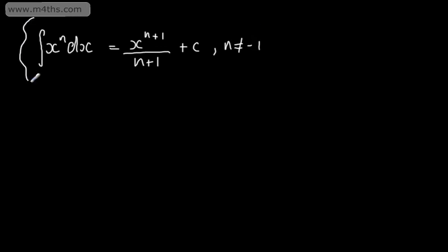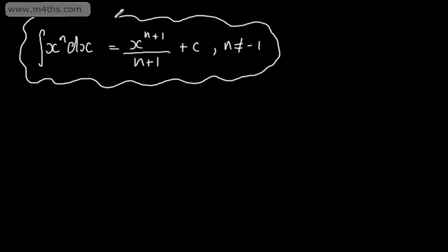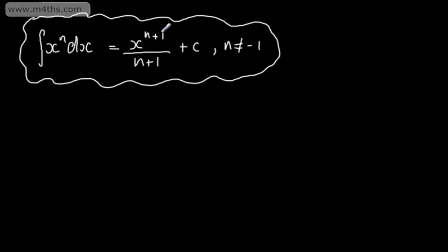Let's take this and break it down — there's a lot to take on board. All this is saying is: when you integrate a power of x, you raise by a power, you divide by that new power, and you add what we call a constant of integration, which is c. We can't have n equal to negative 1 using this form; in later units you'll see that's logarithmic integration.